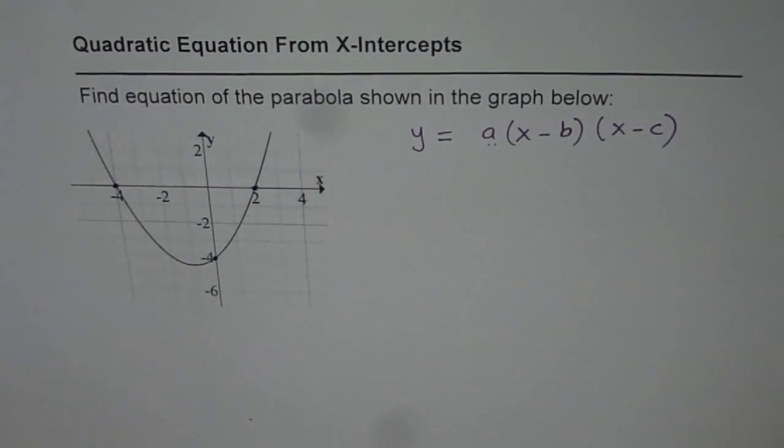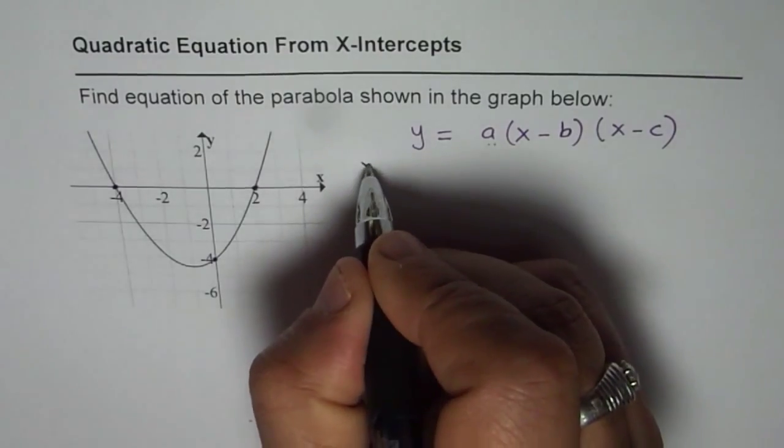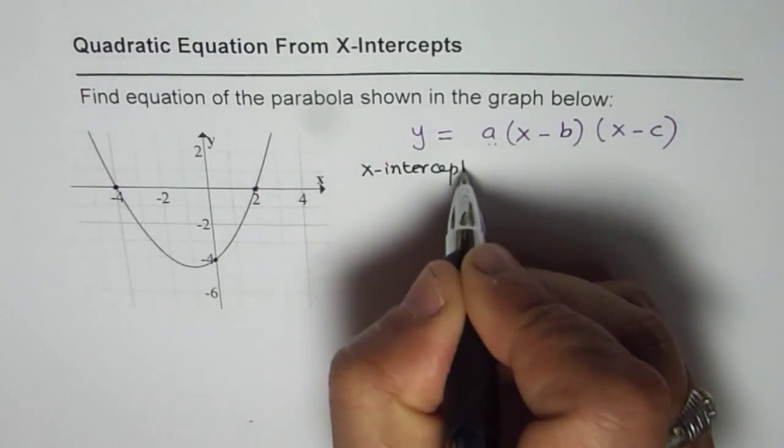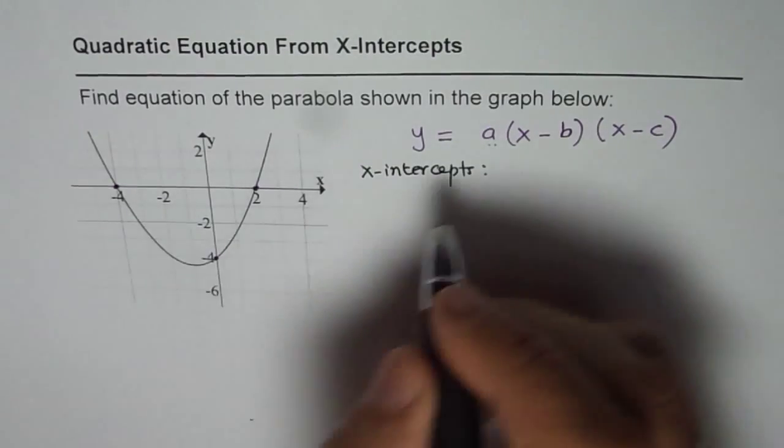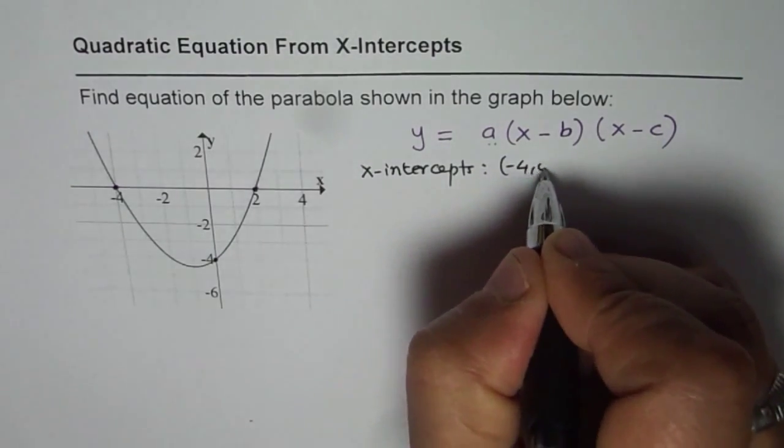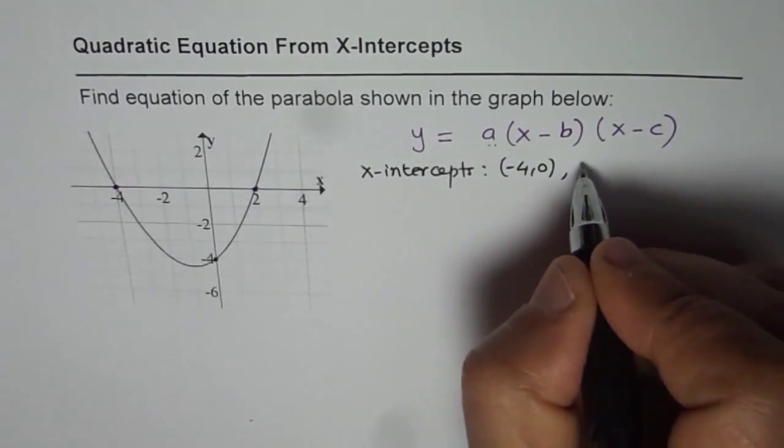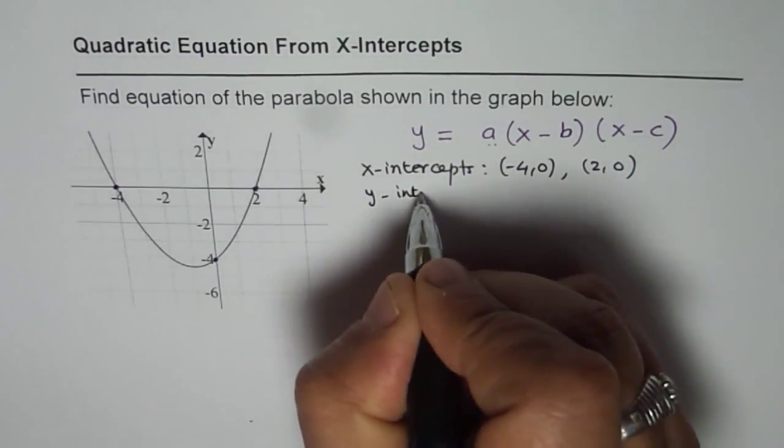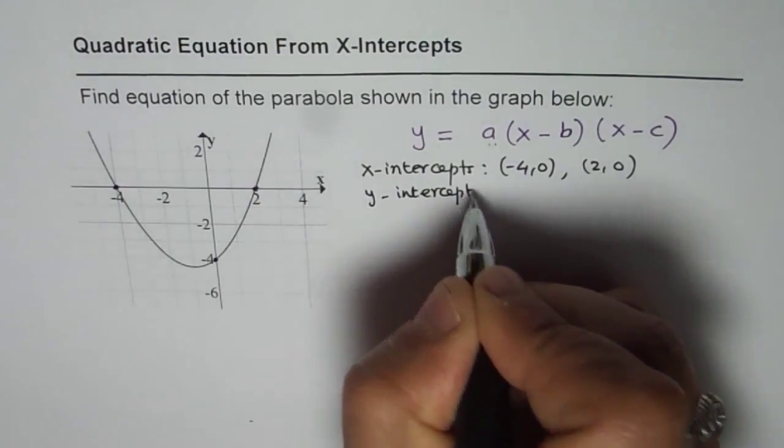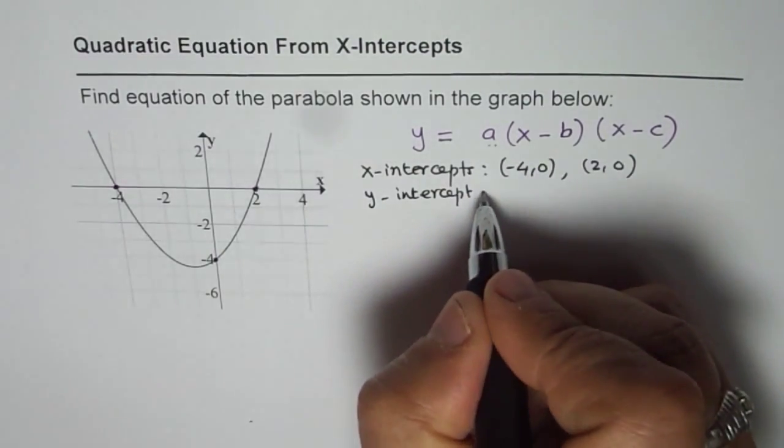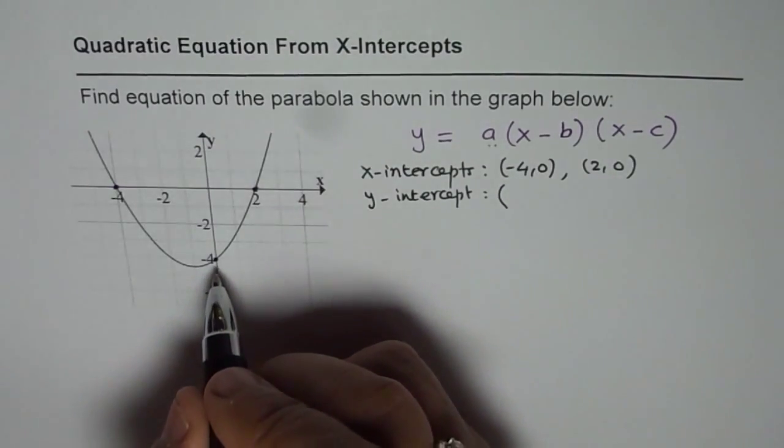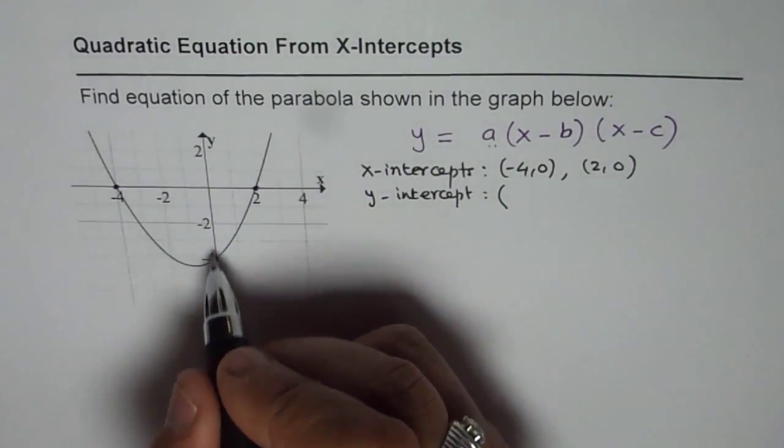So what we have here is x-intercepts at minus 4, 0 and at 2, 0. And then we will also consider the y-intercept so that we get the equation of this particular graph. The y-intercept is at 0, minus 4.